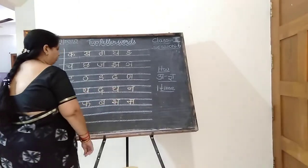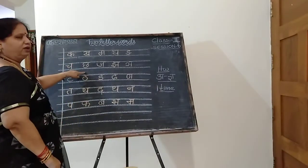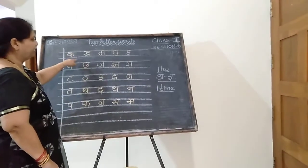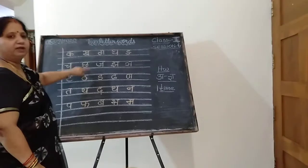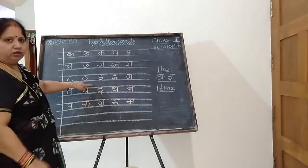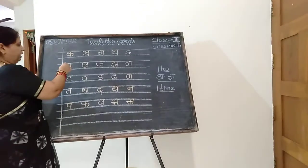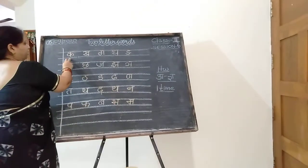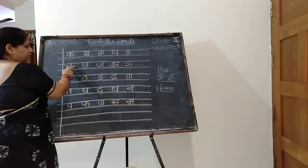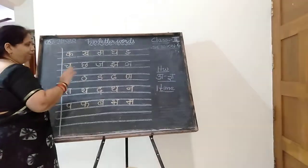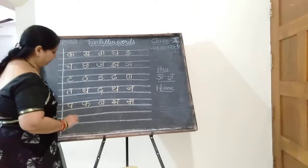Now, why I leave the line — you don't leave the line, children. Without leaving a line you can write. This is only for your clarity purpose I leave the line. Continuously keep on writing. After Ka you can write Ch, after Ch you can start the next row. So sharpen your pencil and write. Place the finger gap.